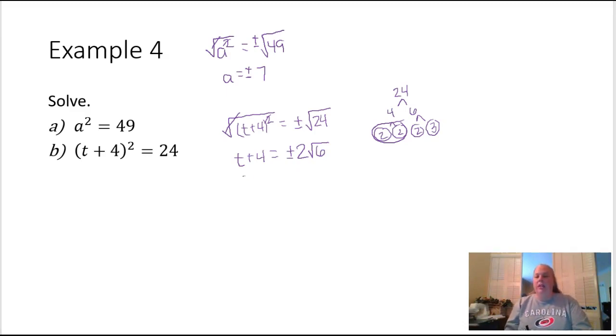Finally, we're trying to solve for T, so we can subtract four from those sides. These are not like terms because that one has a radical on it, this one does not. So my solution is going to be negative four plus or minus two times the square root of six.